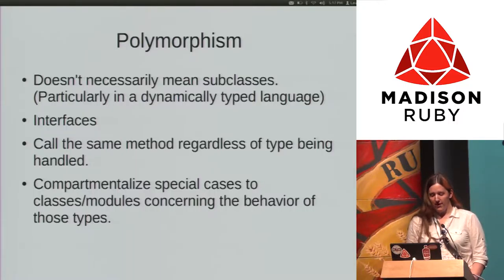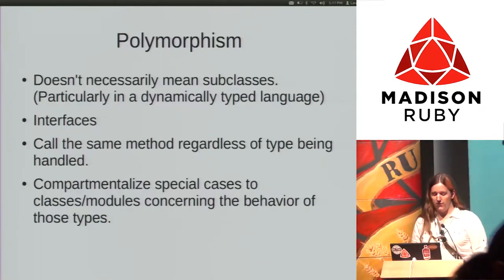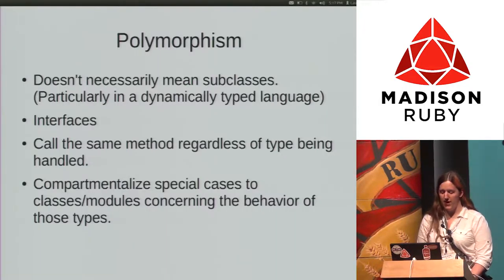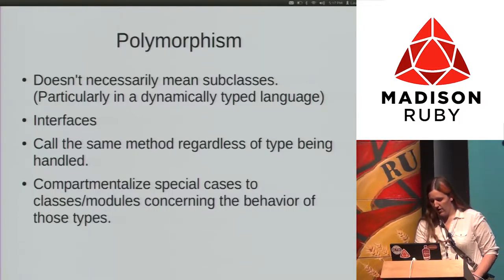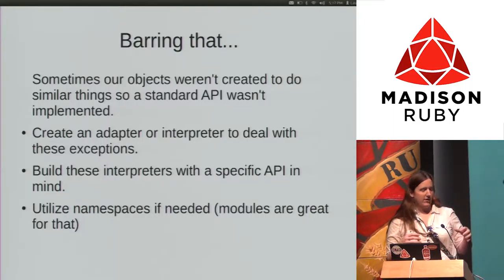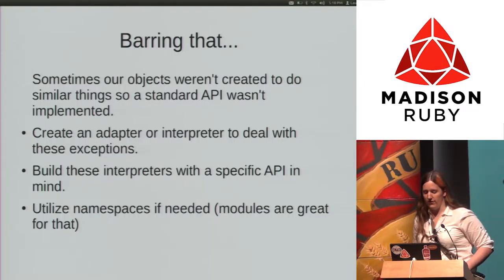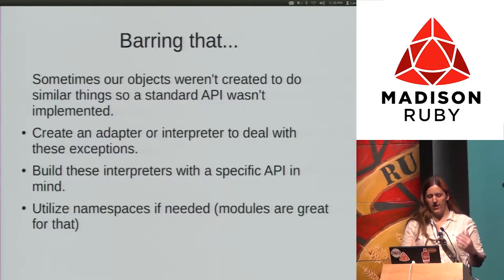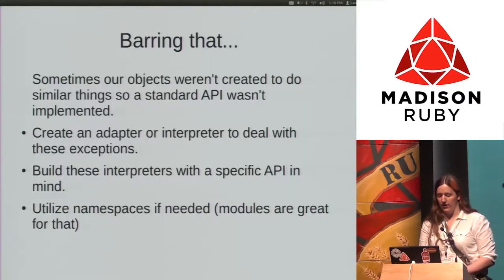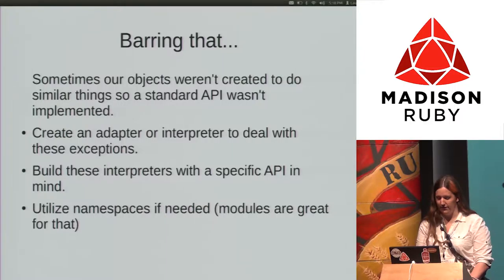Polymorphism doesn't necessarily mean subclasses in dynamically typed languages. Interfaces, APIs, et cetera, are a fantastic way to deal with this. You can call the same method regardless of the type being handled and compartmentalize special cases to the classes and modules concerning the behavior of those types. You can build these APIs into your objects.